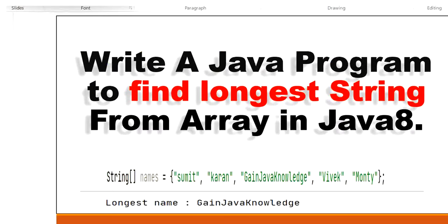In this video we are going to write a Java program to find the longest string from an array in Java 8 using Stream API. For example, we have a string array of names: Sumit, Karan, Gain Java Knowledge, Vivek, Monty. From this array we need to find the longest string. To do this, we calculate the length for each string, compare them, and find the longest. The length for 'Sumit' is 5, for 'Karan' is 5, and for 'Gain Java Knowledge' it is much longer.